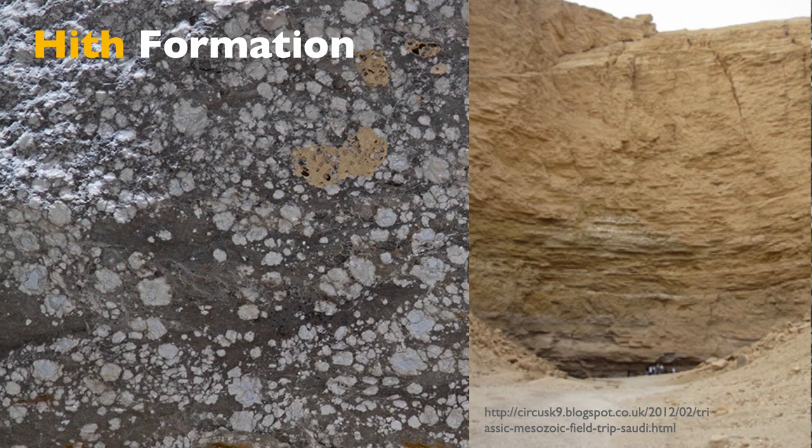At outcrop, you can still see some of the evaporite. You can see the Hith formation, which is the last stage of evaporite deposition in the Jurassic and is the ultimate seal for the Arab formation. To do this, you need to go into the cave known as Dalhith — hence the name of the formation. Here you can see the entrance of the cave, and at the top you see a gypsum layer, typical gypsum with lots of nodules — characteristic of gypsum deposited in sabkha settings. Sabkha is a continental type of deposit that is often coastal, very close to the ocean.